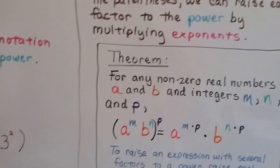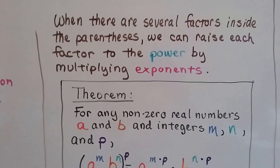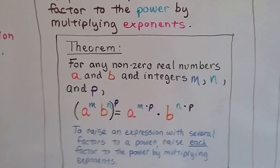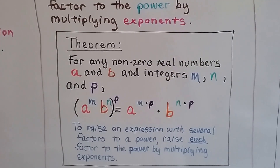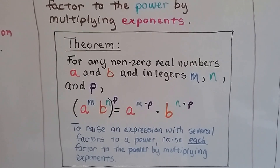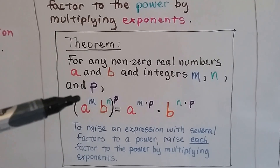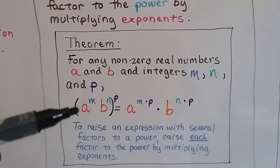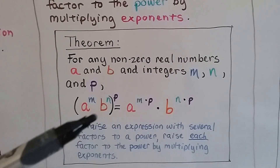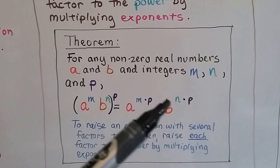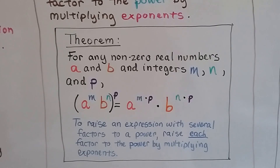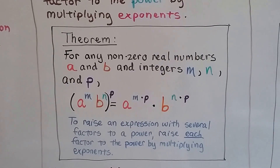When there's several factors inside the parentheses, we can raise each factor to the power by multiplying the exponents. So here's our second theorem. For any non-zero real numbers a and b, and integers m, n, and p, we raise each one to p. So we would multiply m times p, and we'd multiply n times p. To raise an expression with several factors to a power, we raise each factor to that power by multiplying the exponents.